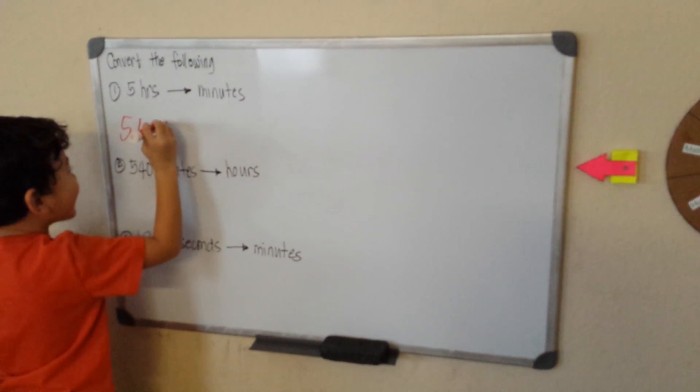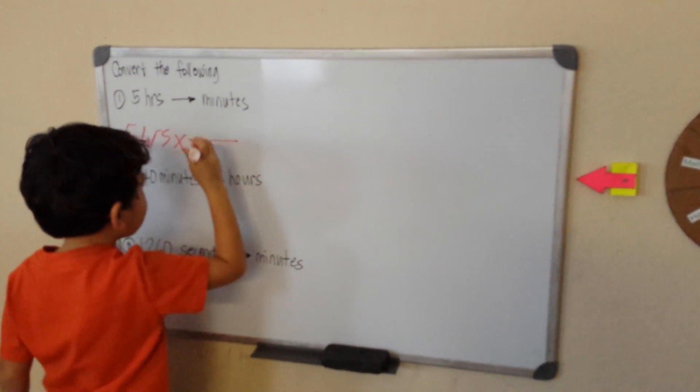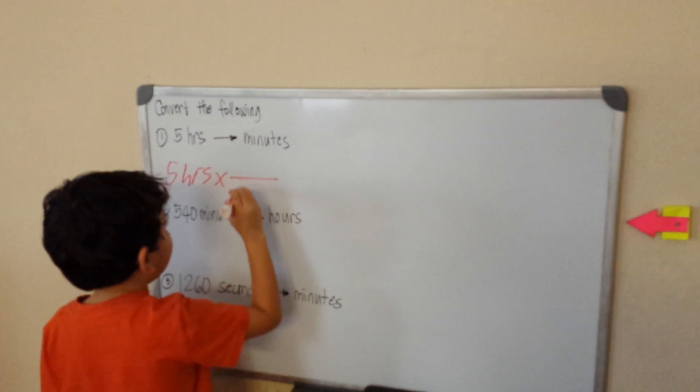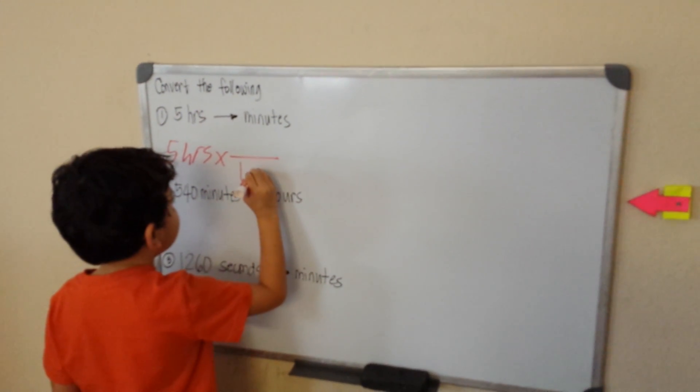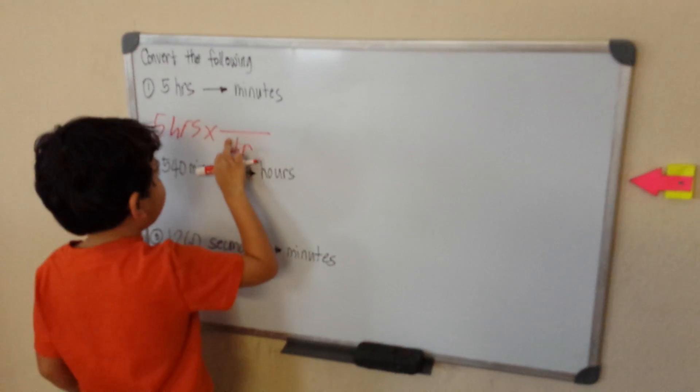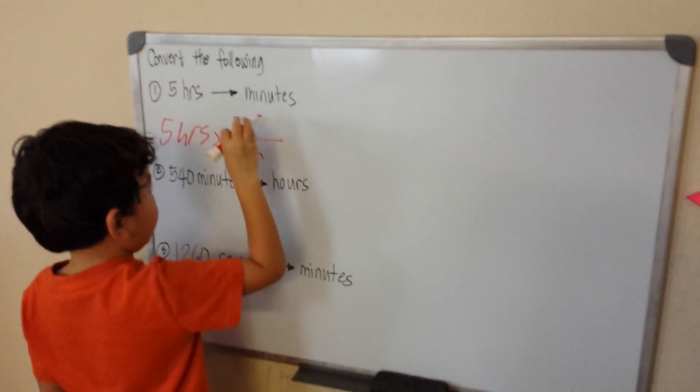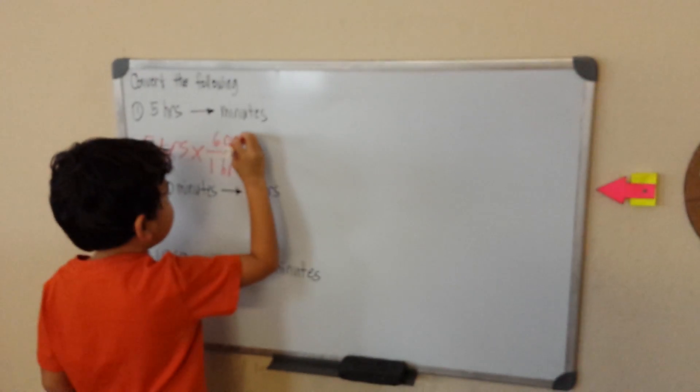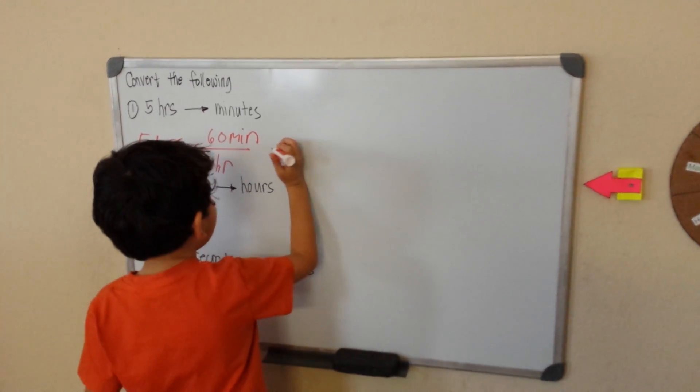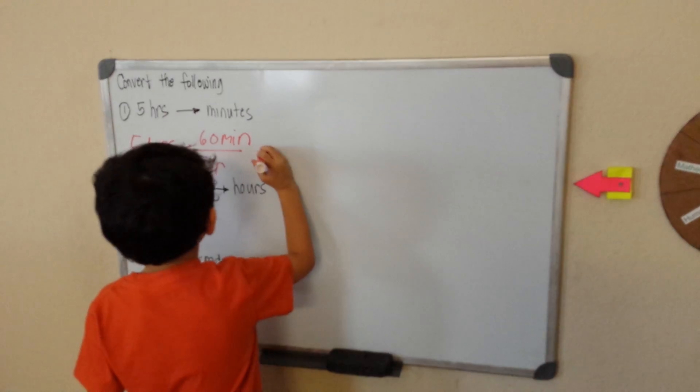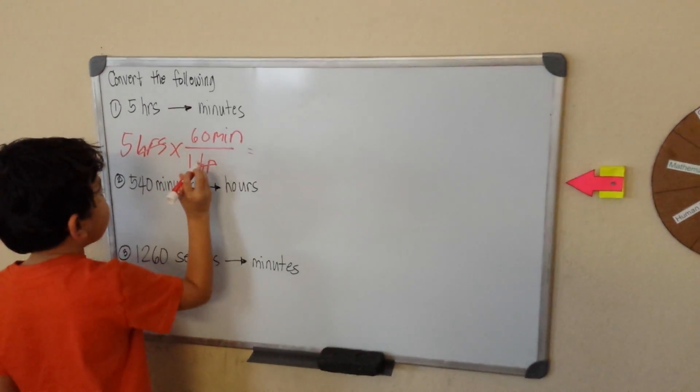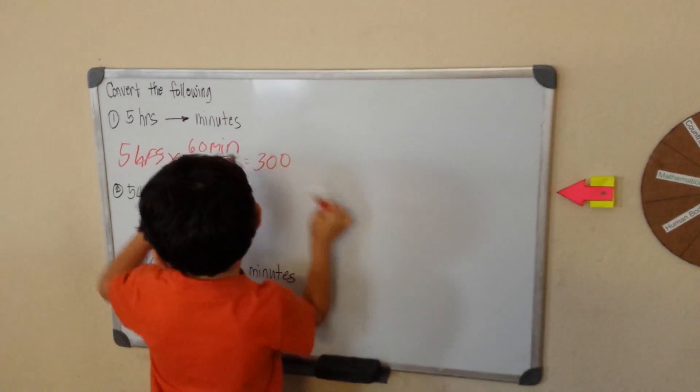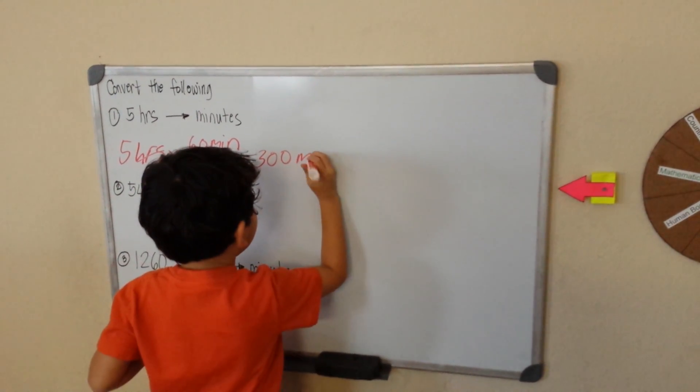Five hours. One hour, what does one hour have? It has 60 minutes. So we can cross hours. Then 60 times 5 is 300. The variable one is just 300, so 300 minutes.